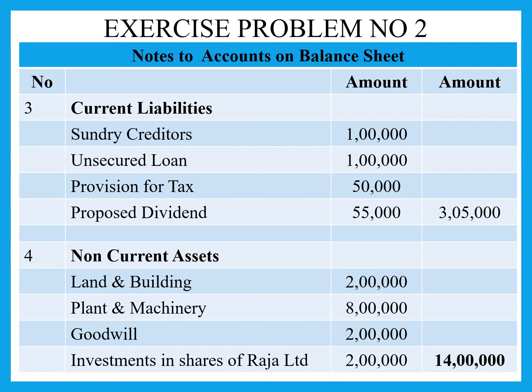Now moving to non-current assets. Land and building is 2 lakh rupees, plant and machinery is 8 lakh rupees, goodwill is 2 lakh rupees, and investments in shares of Raja Limited — since this is a long-term investment as per this problem, it goes under non-current assets, that is 2 lakh rupees. The total non-current assets come to 14 lakh rupees.